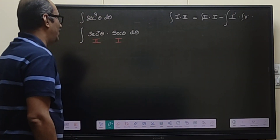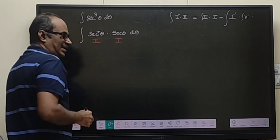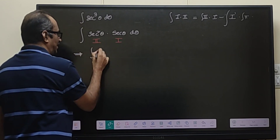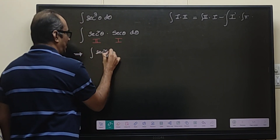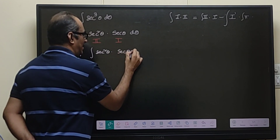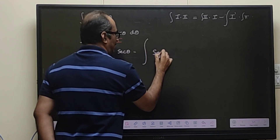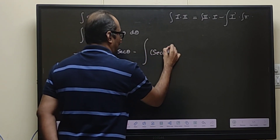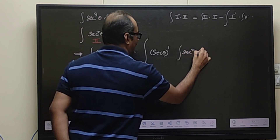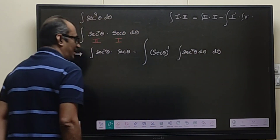In this scenario, our second function is secant square theta and our first function is secant theta. Applying that formula, we have: integral of the second function, that is secant square theta, multiplied with the first function, that is secant theta, minus the integral of the derivative of the first function, secant theta, multiplied with the integral of the second function, that is integral of secant square theta, d theta.